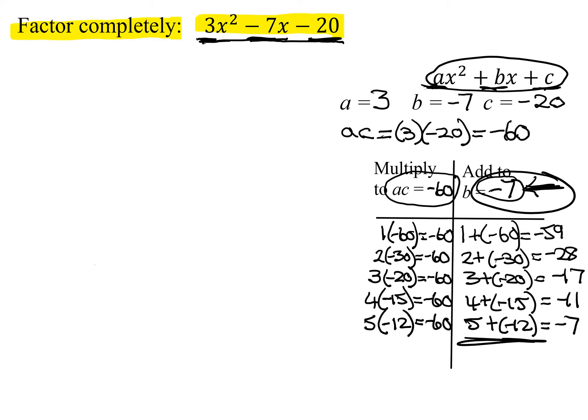So those are not my factors. That's what I'm going to break down my middle term into two terms. So I'm going to have 3x squared, instead of negative 7x, I'm going to have plus 5x minus 12x minus 20. Because 5x minus 12x gives me my negative 7x. So now I have four terms. How do you factor four terms? Grouping.